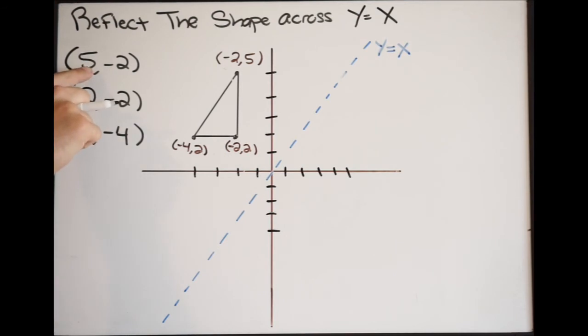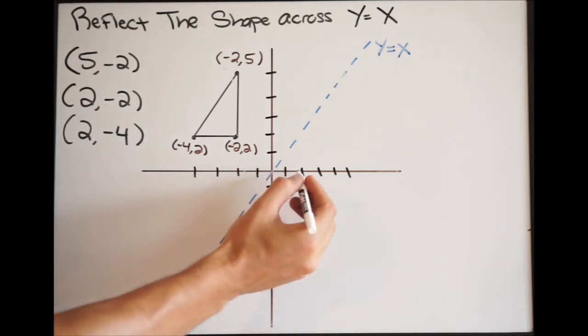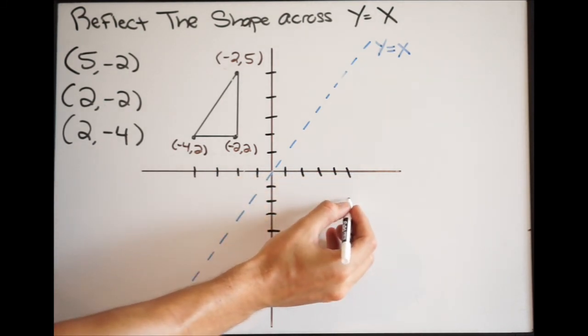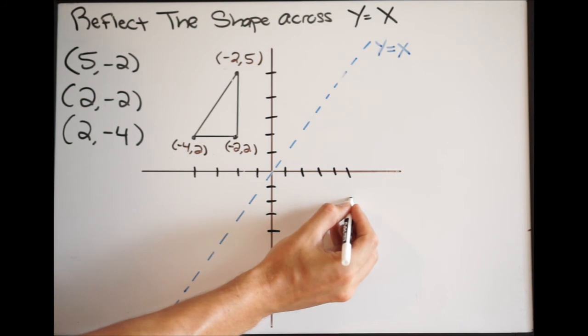Starting here, we're going to graph 5 comma negative 2. We're going to go over 5, so 1, 2, 3, 4, 5, and then down 2. That's going to put us right here.